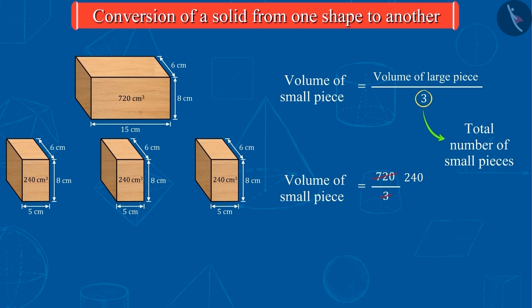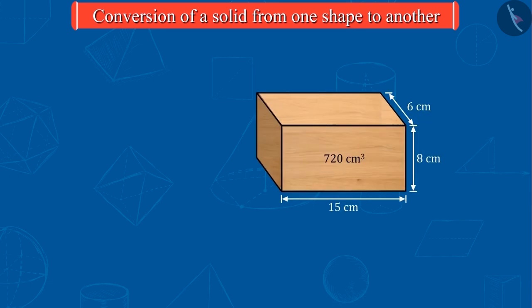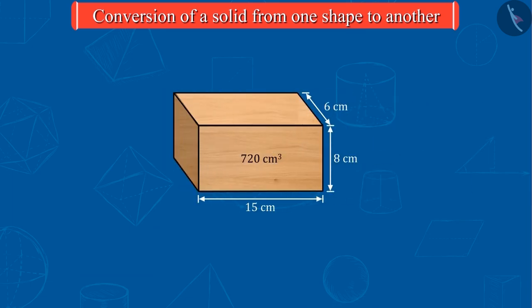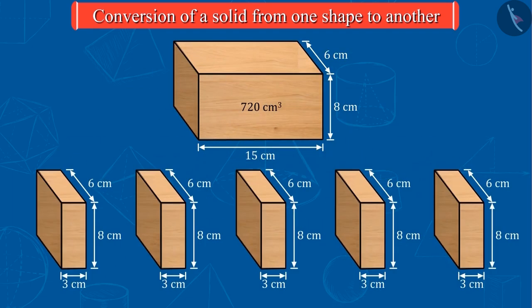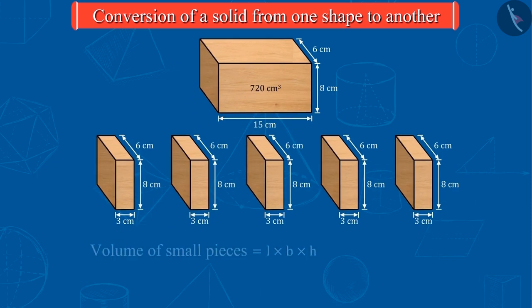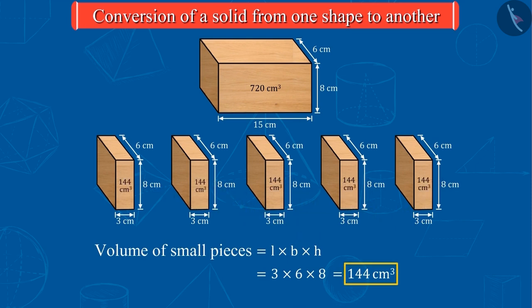Let us see some more examples. If we cut this piece of wood into 5 equal pieces this time, the volume of each piece will be 144 cm³.